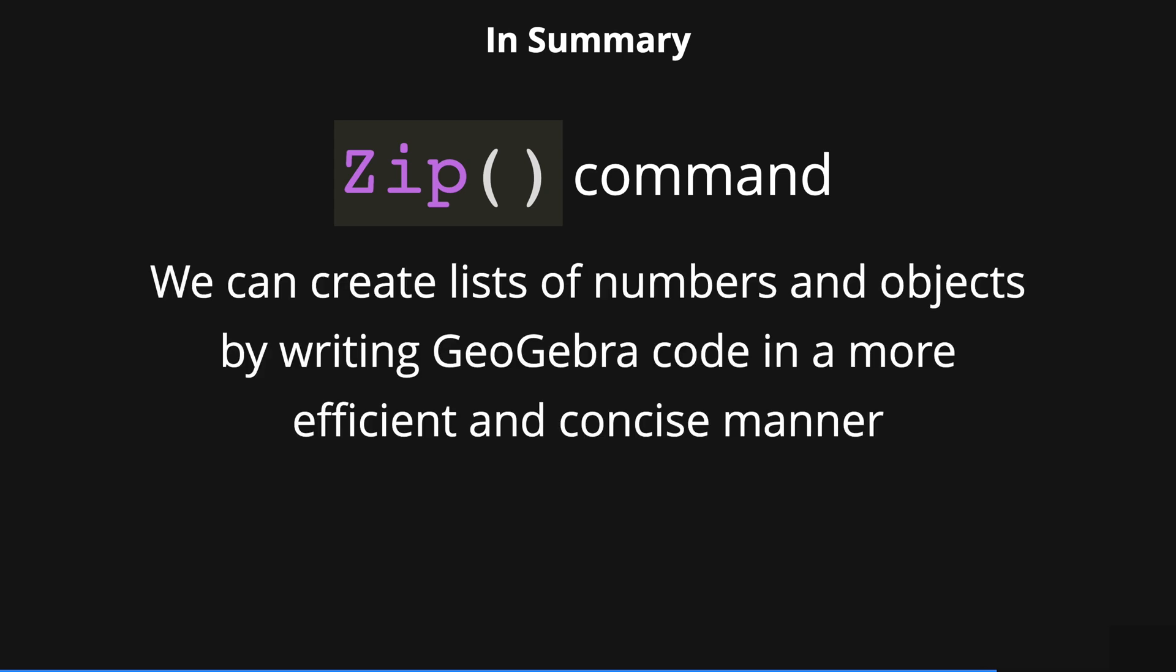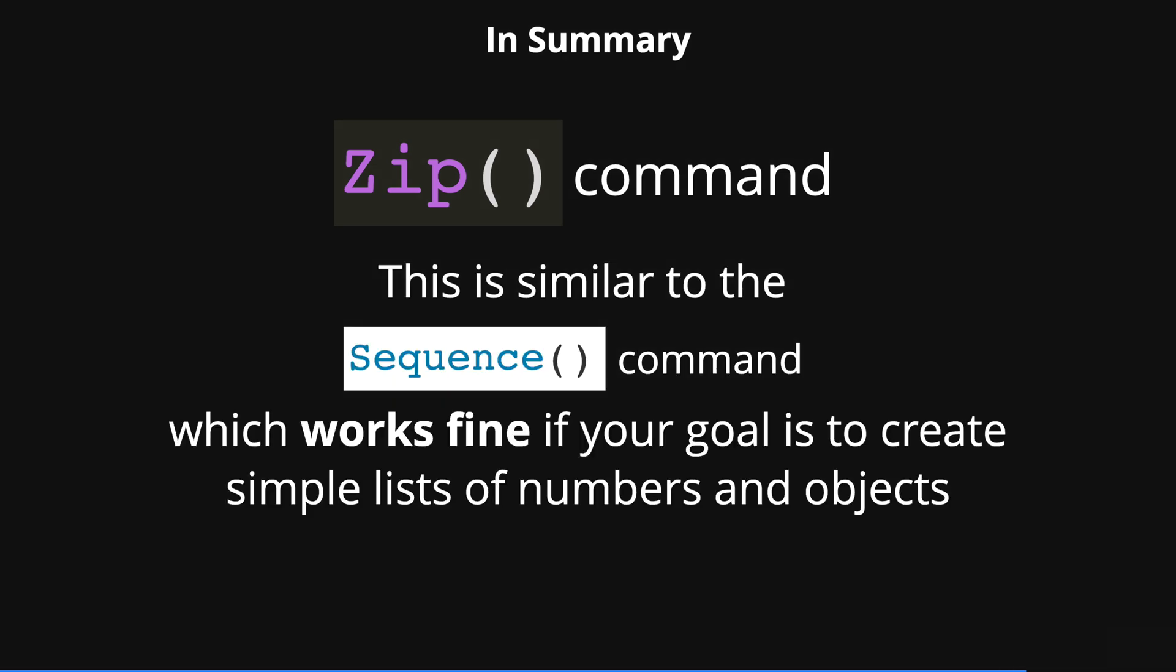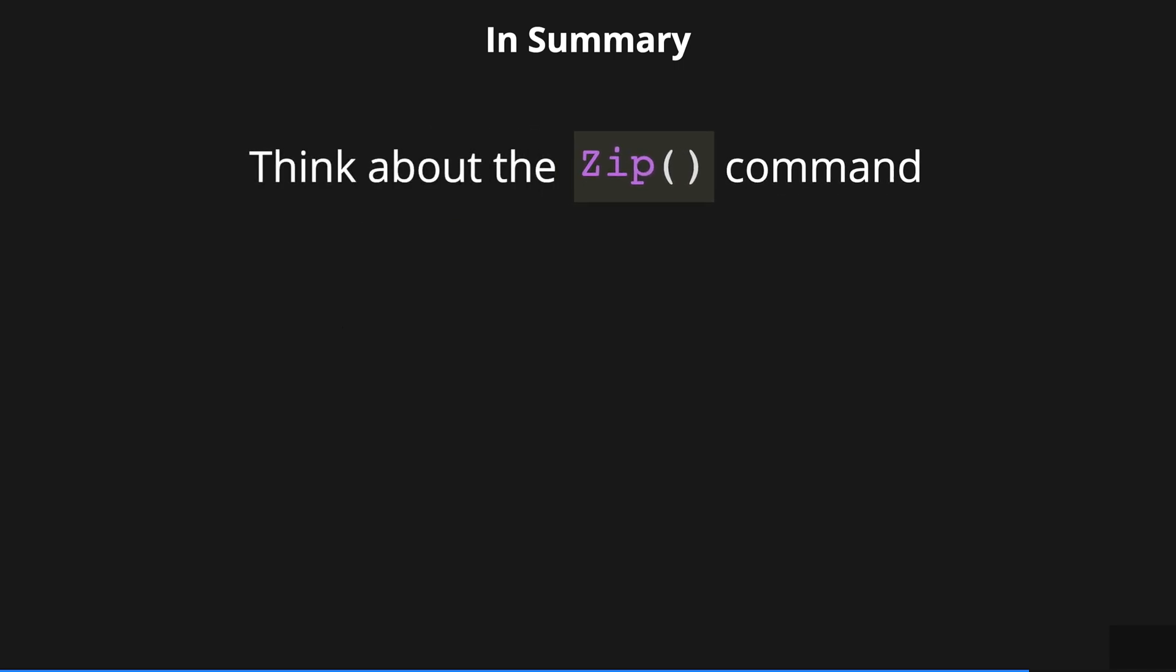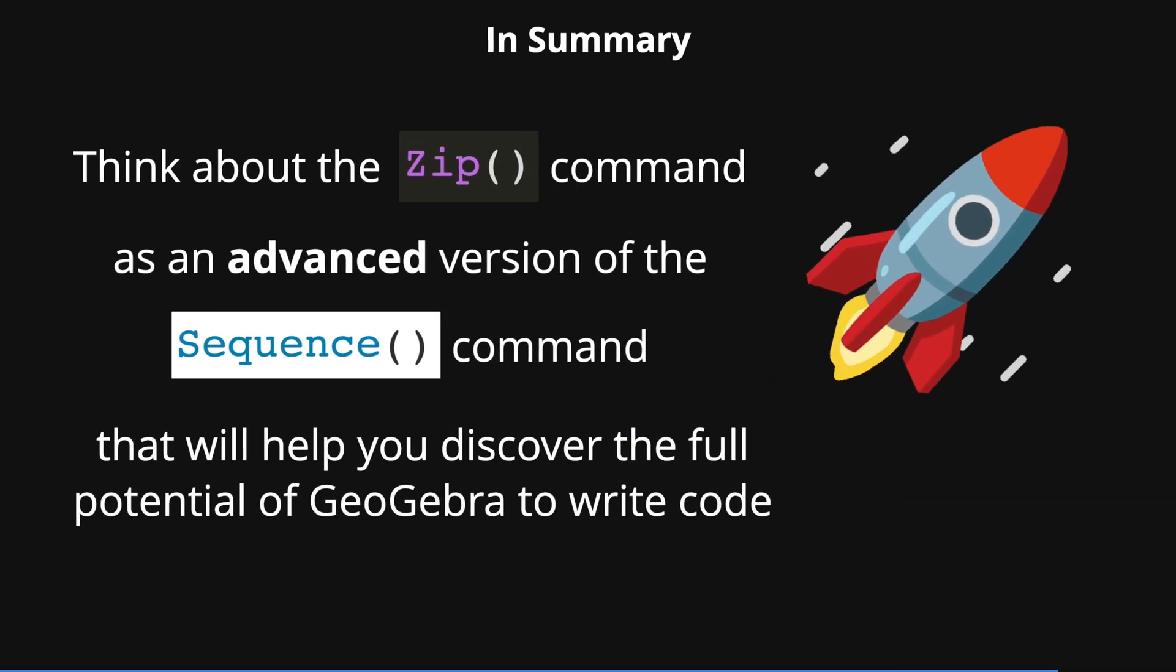So, in summary, with the zip command, we can create lists of numbers and objects by writing GeoGebra code in a more efficient and concise manner. This is similar to the sequence command which works fine if your goal is to create simple lists of numbers and objects. Think about the zip command as an advanced version of the sequence command that eventually will help you to discover the full potential of GeoGebra when you are writing code.